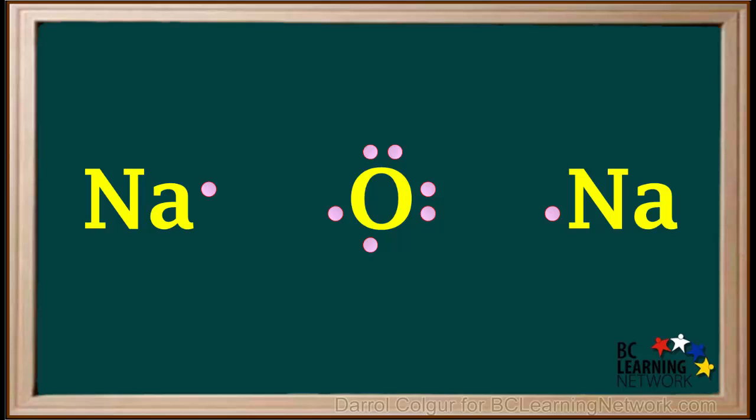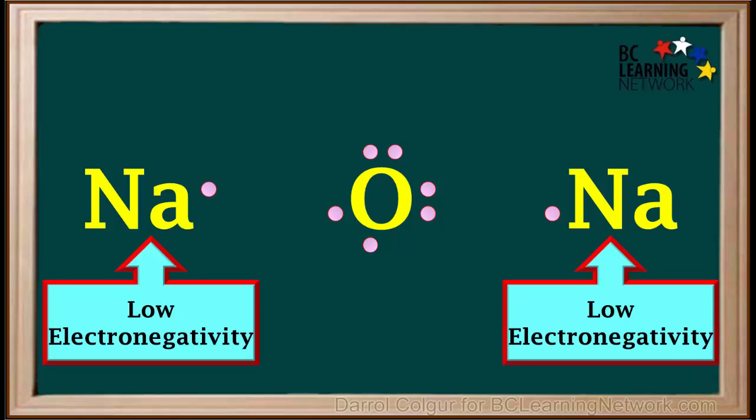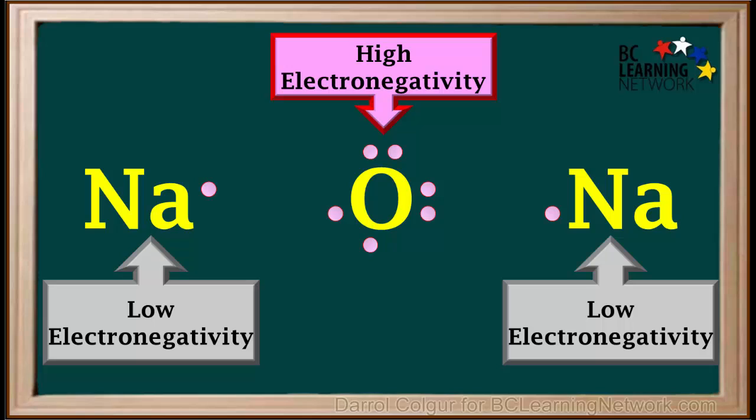Here are the Lewis structures for two sodium atoms and one oxygen atom. Metals on the left side of the periodic table, such as sodium, all have low electronegativity values. And oxygen, a nonmetal near the right side of the periodic table, has high electronegativity.